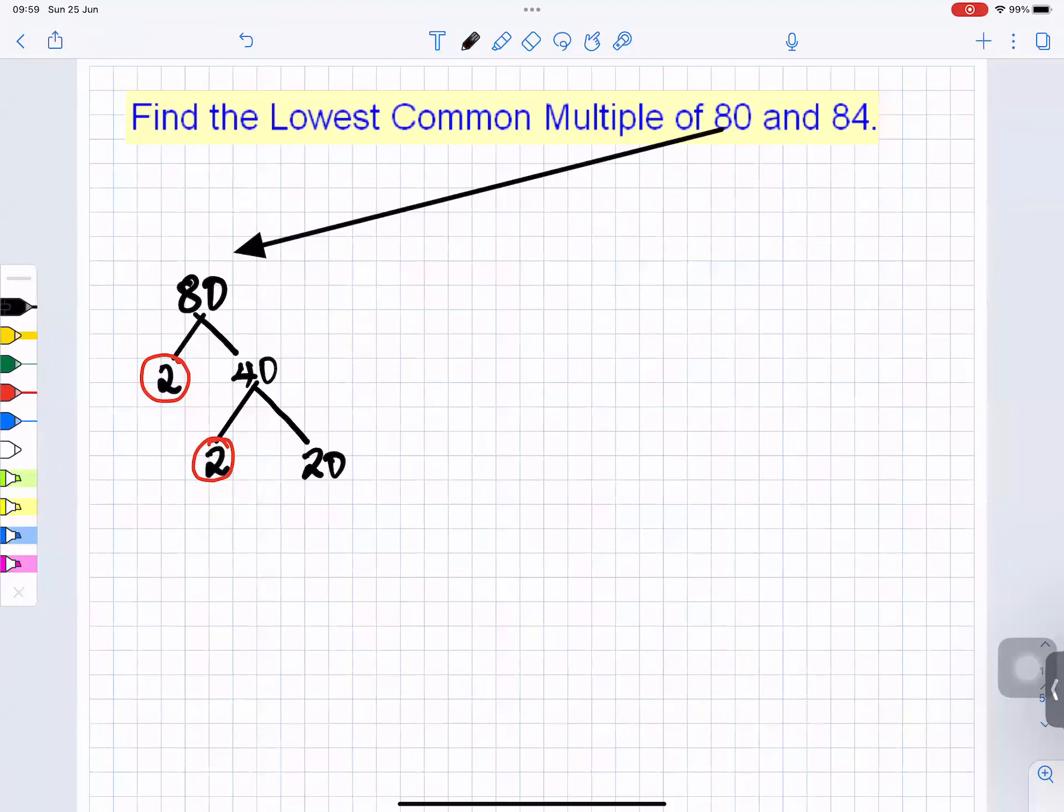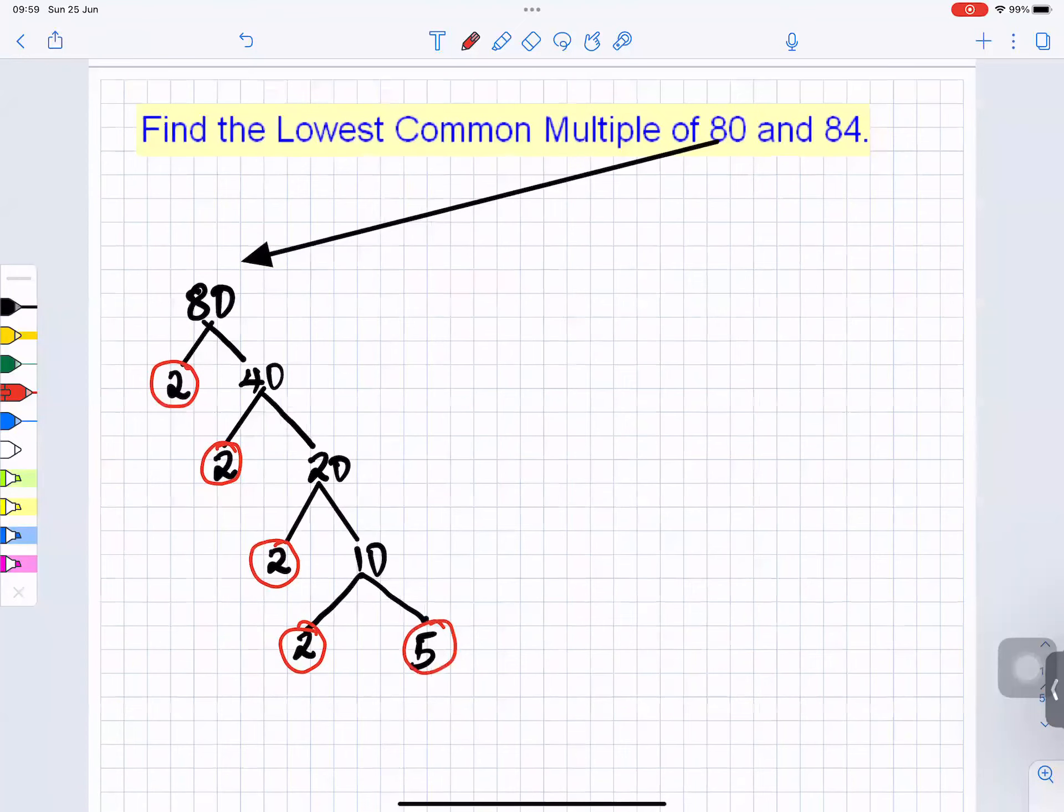The reason why I'm using 2 is because 2 divides into 20 without a remainder. You can use 4 and 5, but you have to keep breaking down. Whenever there's an even number, I use 2, so it's 2 again and 10, and 10 will split into 2 and 5. So 2 is a prime number, 5 is a prime number, so I will stop there.